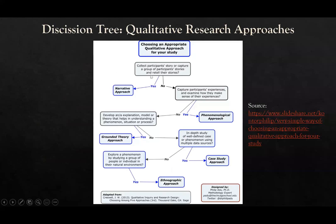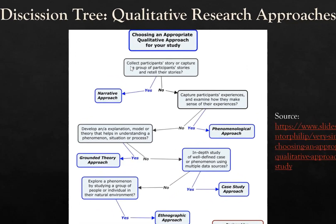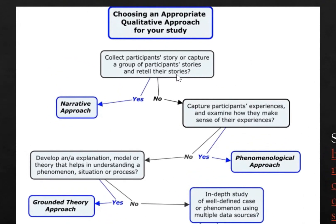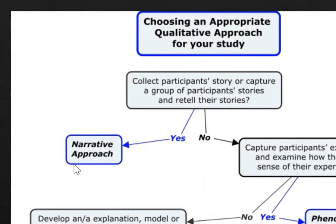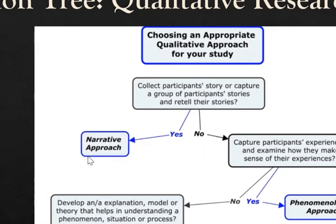So, this is just an overview, and this is a decision tree that will help you to decide which of the five approaches will be the best way for you. If you want to collect participant stories and try to analyze and retell the stories, then it will be a narrative approach.